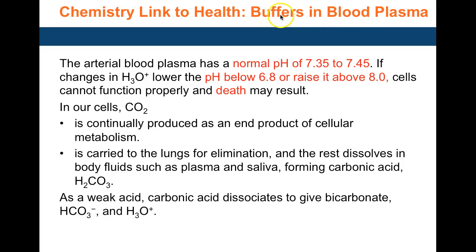The pH of blood is maintained in a very narrow range from 7.35 to 7.45. If it goes below 6.8 or above 8, it will result in death. We breathe in oxygen, which is used by cells to produce energy from glucose, and the end result of cellular metabolism is carbon dioxide. CO2 is carried by the blood to the lungs for elimination.